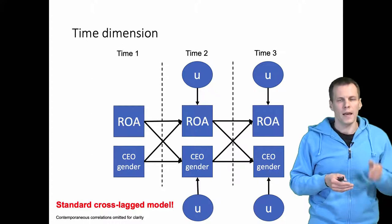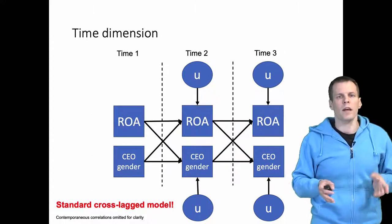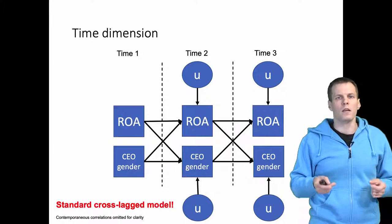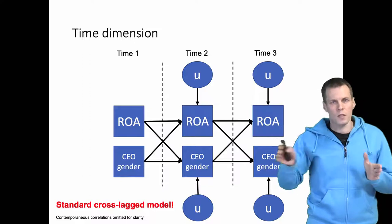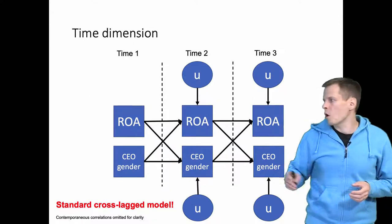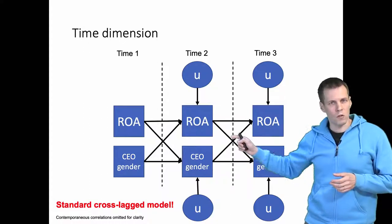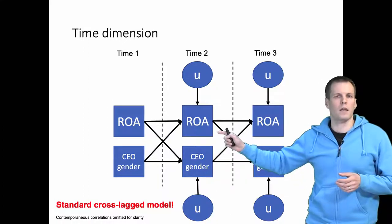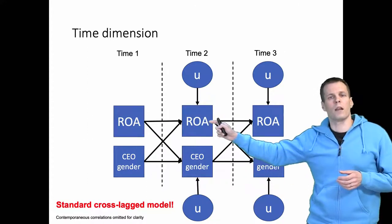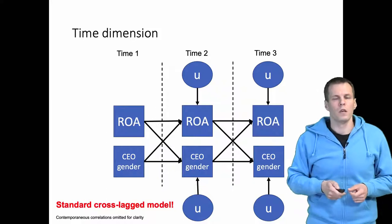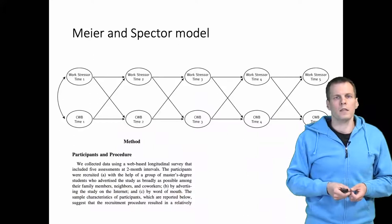We could regress CEO gender on ROA as well, and this is the idea of the cross-lagged panel model. We are testing whether X is the cause of Y or Y is the cause of X, or whether X and Y are simply correlated initially for reasons that are outside the model and they tend to persist over time. We model persistence—this is the autoregressive AR path—and this is the cross-lagged CL path. This model is very commonly used.